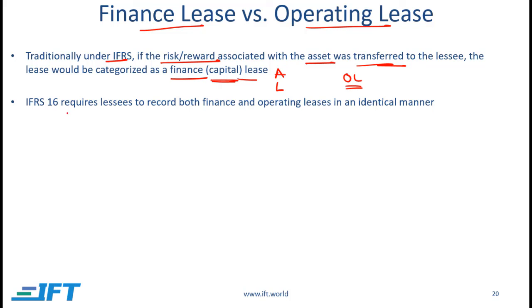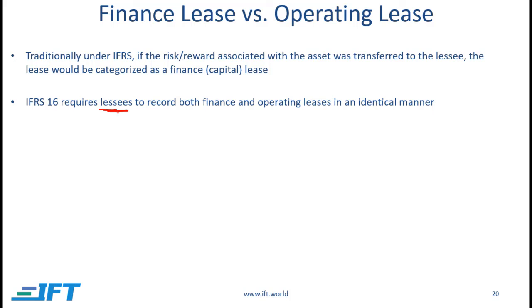But that has changed. There is a new standard, IFRS 16, which requires lessees to record both finance and operating leases in an identical manner. Regardless of whether the risk and reward is being transferred to the lessee, the lessee has to show a lease asset on the balance sheet and the associated liability is also shown on the balance sheet. This accounting treatment will be discussed shortly. This point is with respect to the lessee — for the lessor, this doesn't hold true. A lessor will classify a lease as an operating or finance lease depending on whether the risk and reward is being transferred.